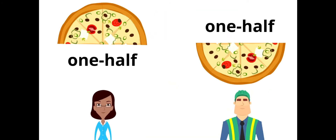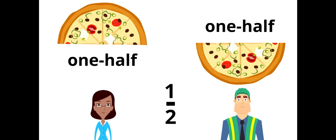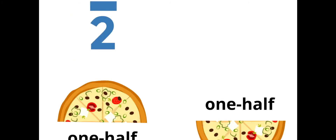Here is what the fraction looks like: a one, a line, and a two — that is the fraction one-half. Each of them, Cindy and Chomsky, get one half of the pizza. This is one half — it's a very important fraction because we use it all the time.